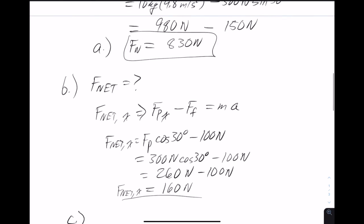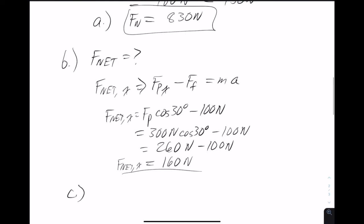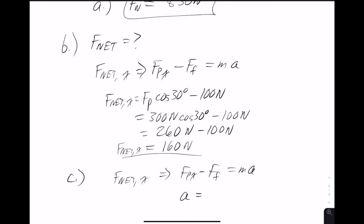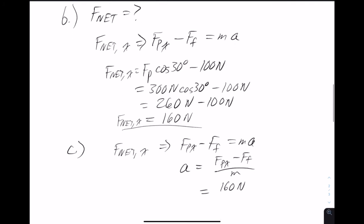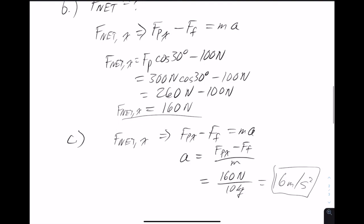Finally, what is the acceleration? We said f net x equals fpx minus f sub f equals ma. Taking that net force and dividing both sides by the mass gives us acceleration equals fpx minus friction over mass. We already calculated that net force as 160 newtons, and the mass is 10 kilograms, so that gives us an acceleration of 16 meters per second squared. That's a pretty big acceleration — bigger than the acceleration due to gravity — so this person is really pulling hard on that box.